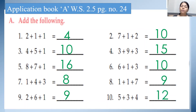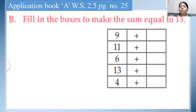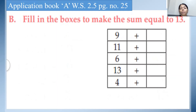This way you will solve the A question of worksheet 2.5. Now children, after doing this, see the B question. In the B question: fill in the box to make the sum equal to 13. On one side some numbers are given — we need to add some more number to make the sum equal to 13.